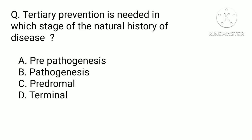Secondary prevention is needed at which stage of the natural history of disease: a) pre-pathogenesis, b) pathogenesis, c) prodromal, or d) terminal? The correct answer is d) terminal.